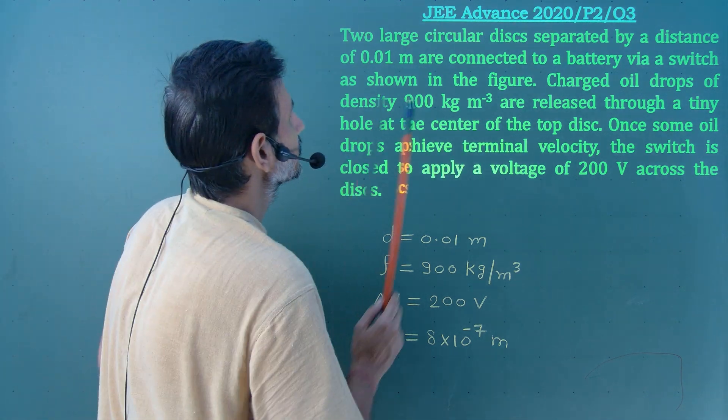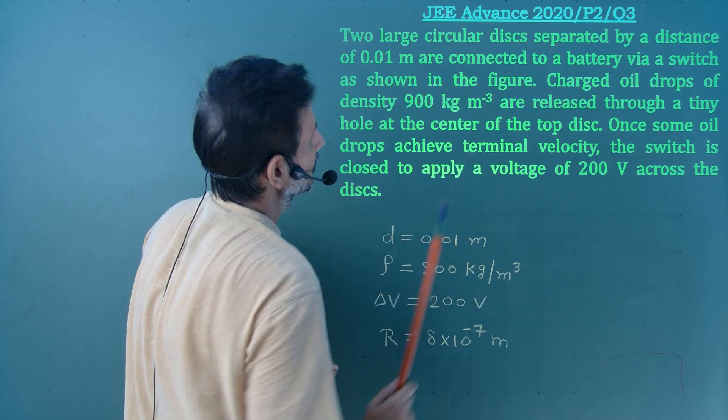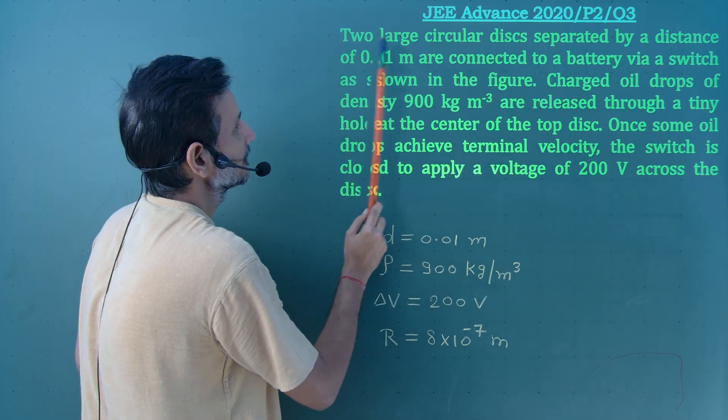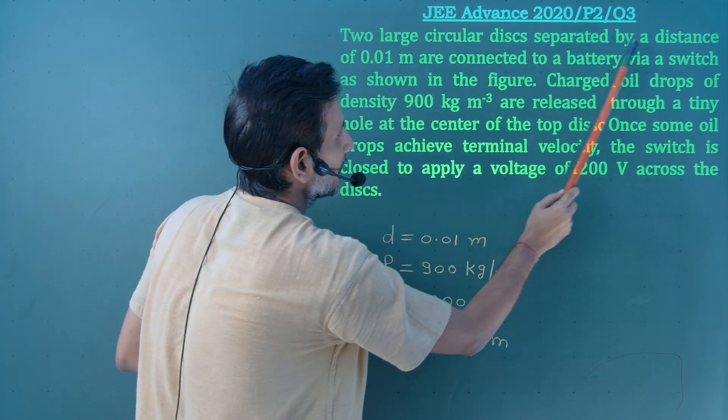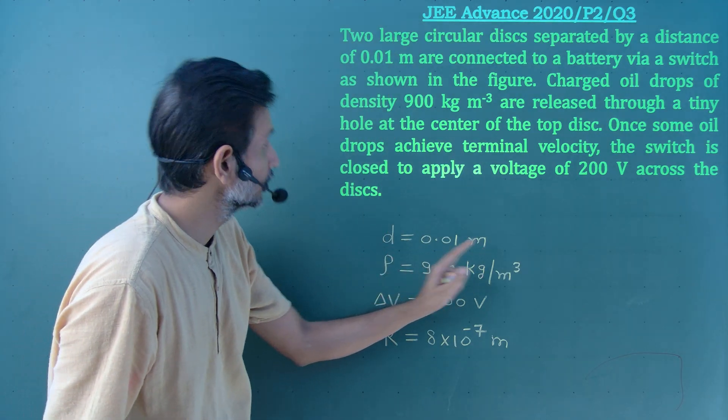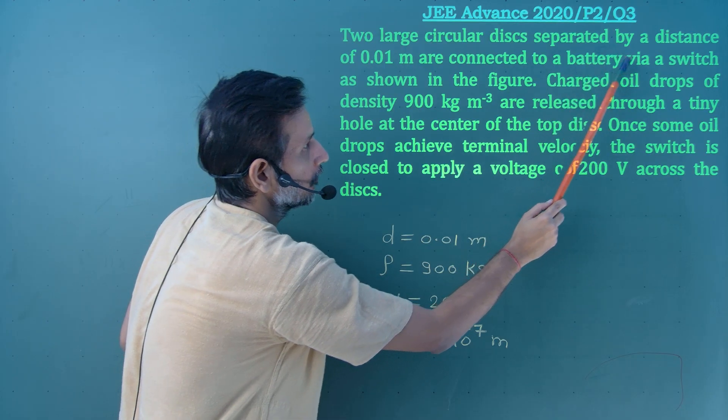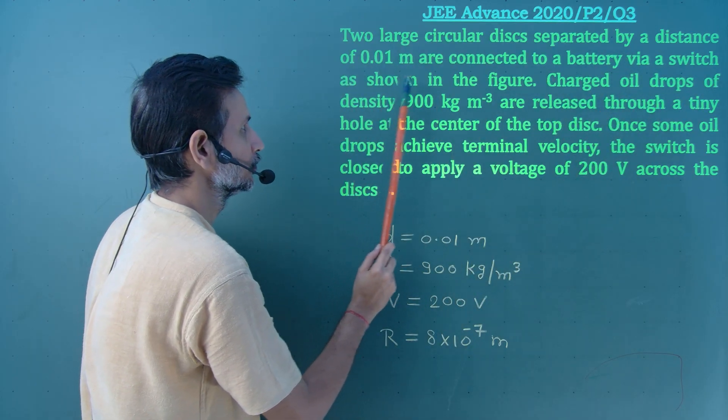Students, let us solve this JEE Advance 2020 paper problem number 3. Two large circular disks separated by a distance of 0.01 meter, d equal to 0.01 meter, are connected to a battery via a switch as shown in the figure.